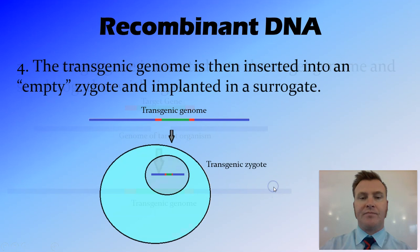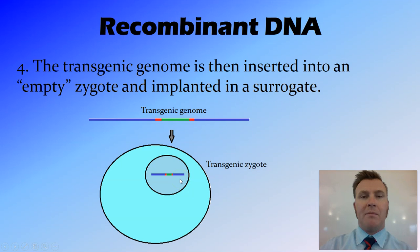You then take that transgenic genome and put it into a zygote, similar to the process of cloning, into the nucleus. That zygote will be implanted into a surrogate, and that blastocyst embryo will be born as a transgenic organism.